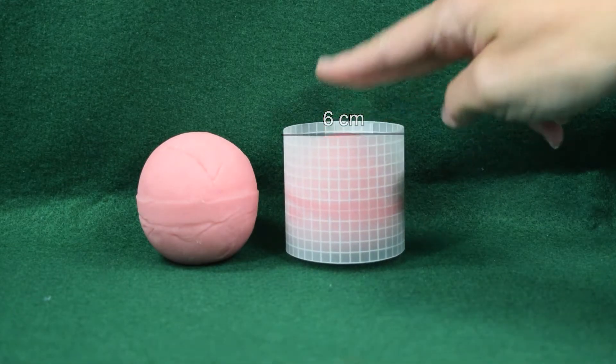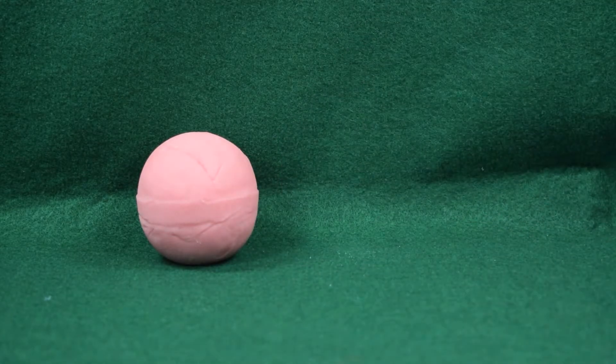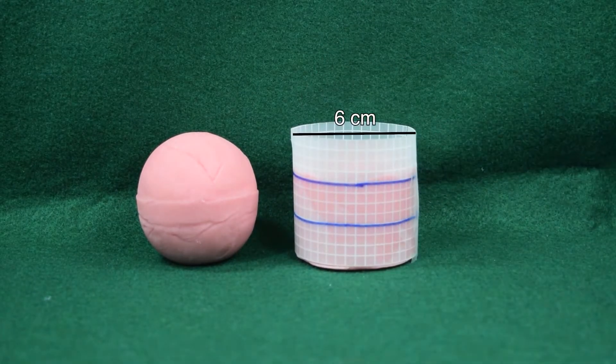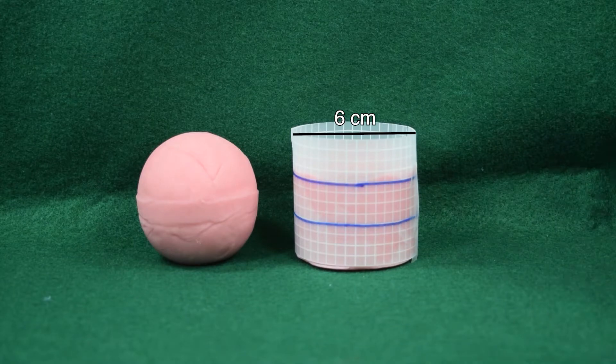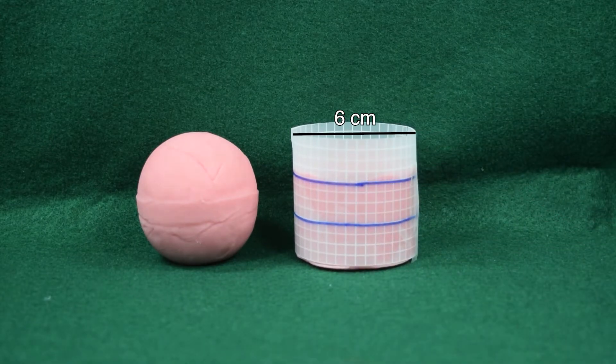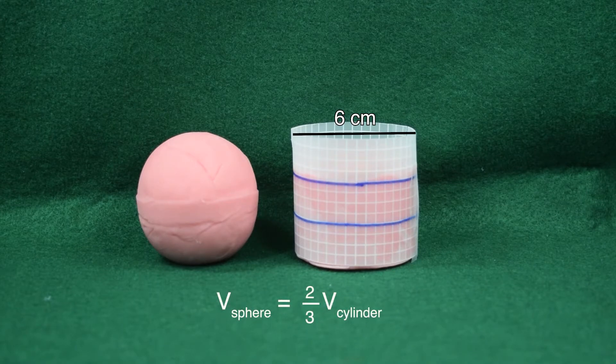To find that fraction, we're going to take our sphere and squish it down and fill in all those empty spaces. When we do, we see that our sphere fills a fraction of the cylinder like we predicted. In fact, it fills approximately two-thirds of the entire cylinder. This tells us volume of the sphere is going to be two-thirds the volume of the corresponding cylinder.